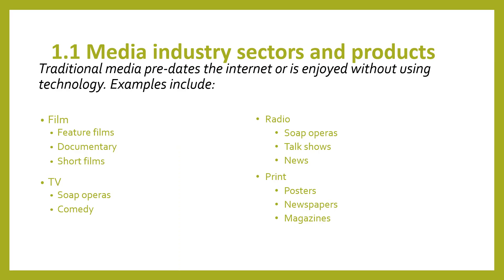The media industry is broken down into two main categories. The first is traditional media, which is basically anything that existed before the internet or doesn't rely on technology — so film, TV, radio, and print. Each of those is sub-categorised with different products within each sector.